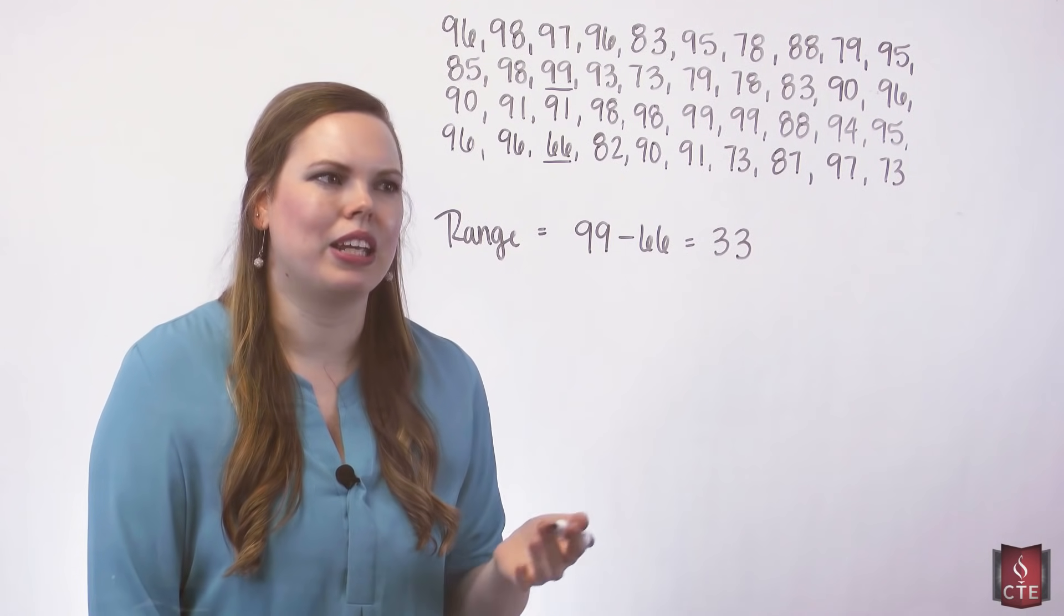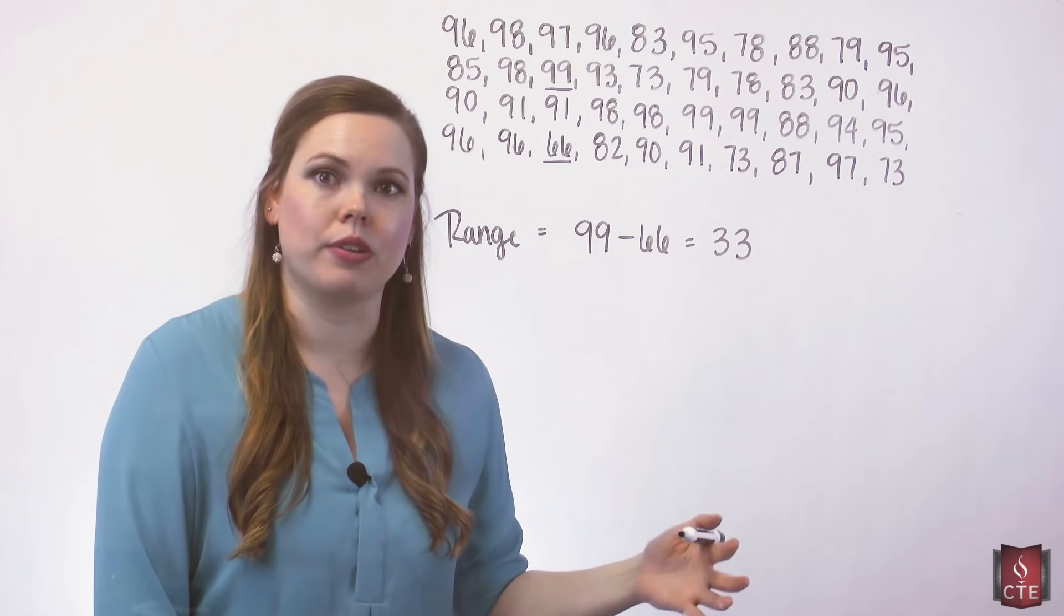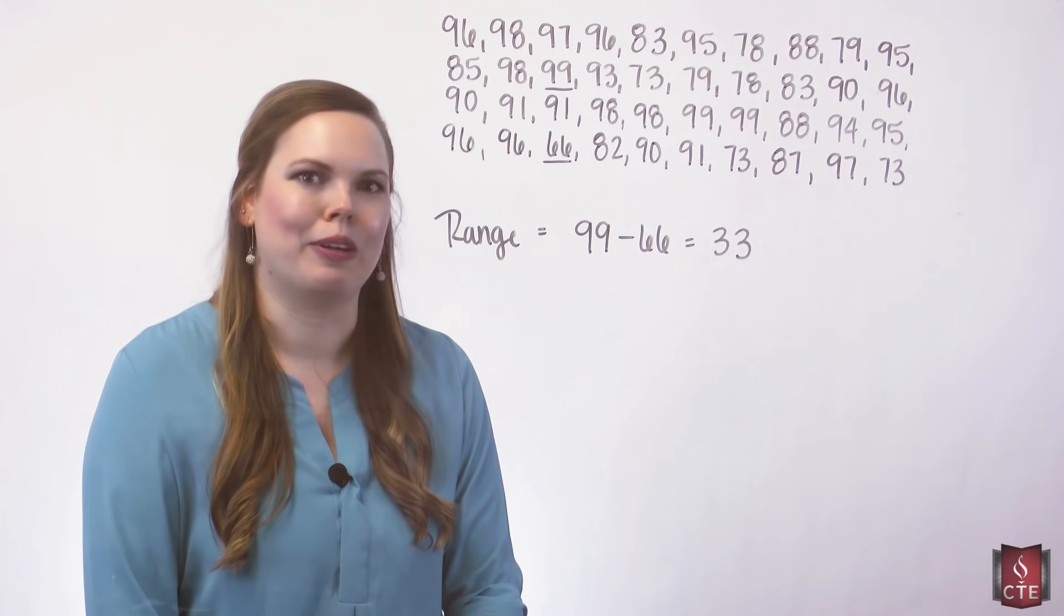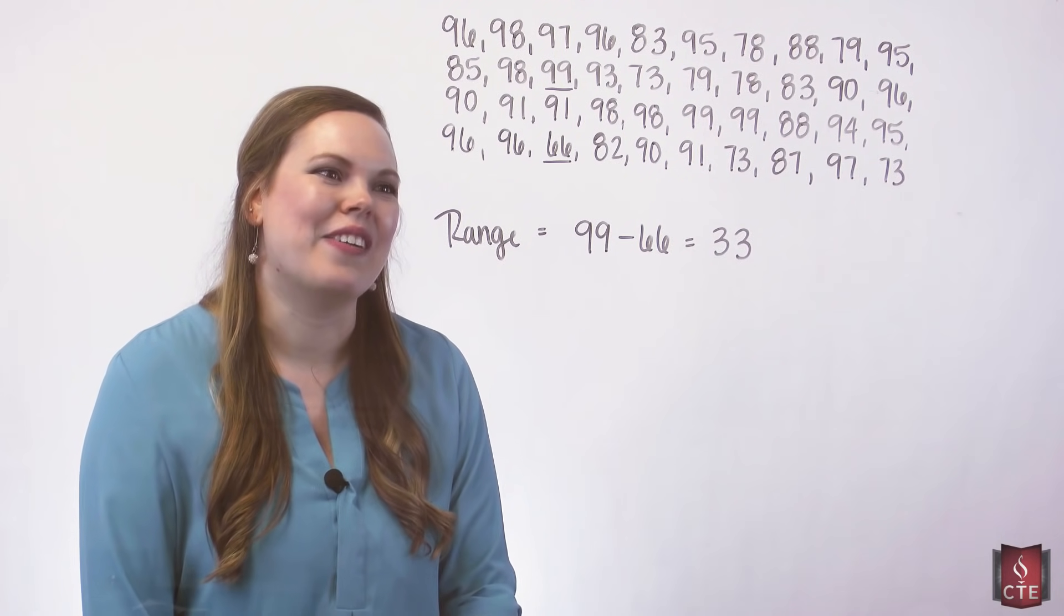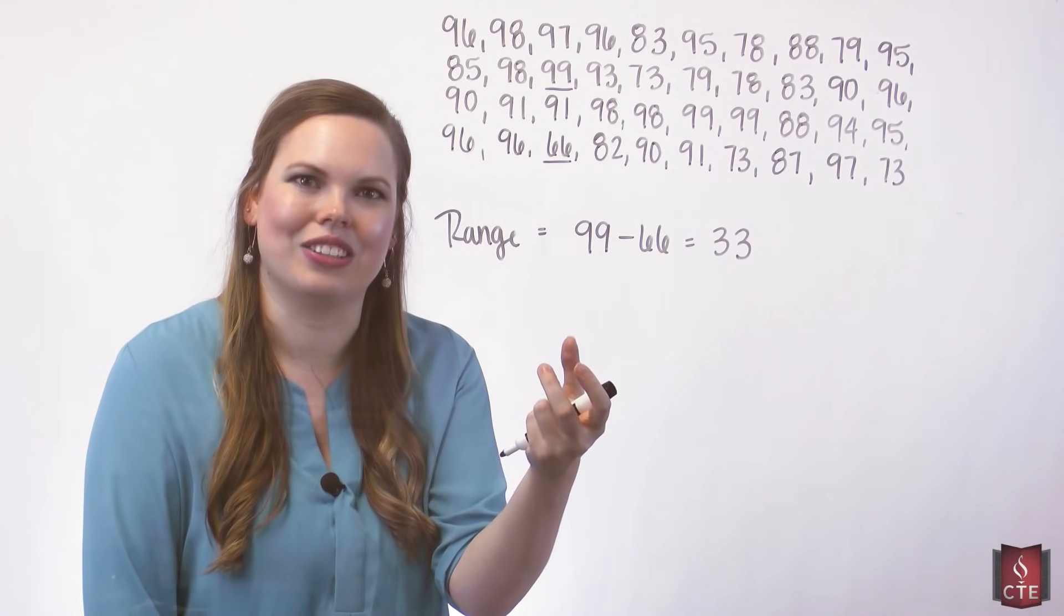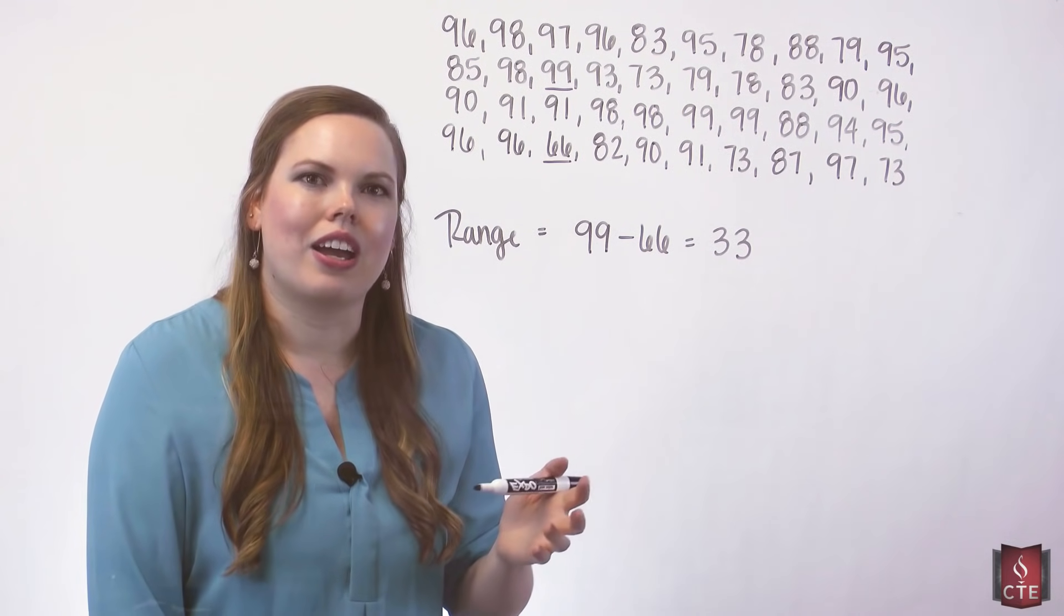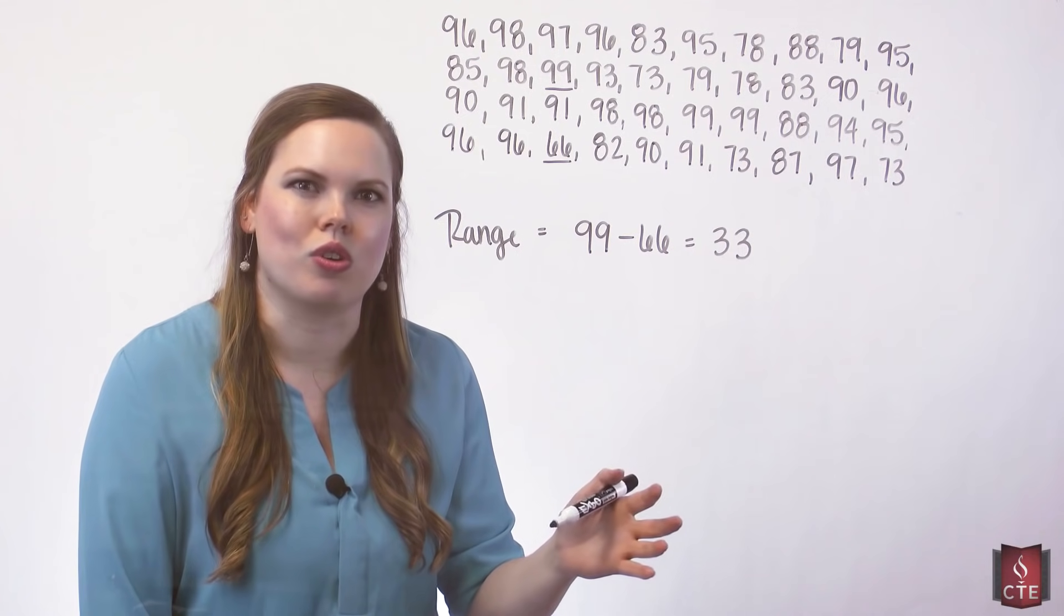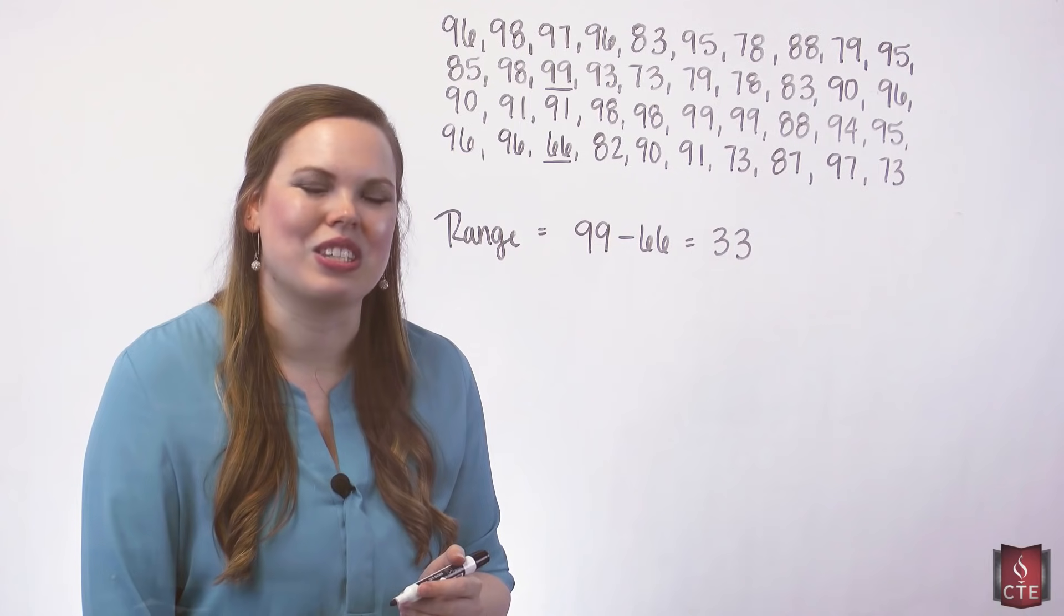As we think about how many classes that we want, we want to keep in mind that we don't want to spread them out too much and have 20 classes for a range of 33. That would be kind of silly. There wouldn't be much data in each class, maybe just one or two pieces of data. But we also don't want to get too small. We don't want three classes and then they get all collected into those three classes and we don't see the significant shape of the data either. Most of the time we want a number of classes between 5 and 15, that's kind of the rule.